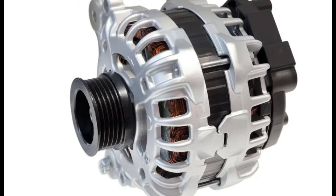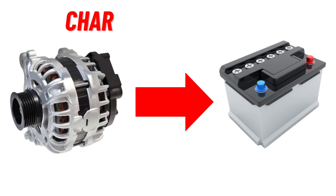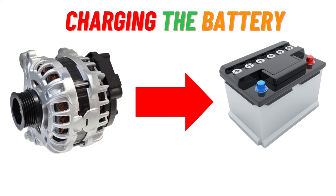Function 2: Charging the battery. Second, it charges the car battery. While the battery provides the initial power to start the engine, the alternator keeps it charged, ensuring there's always enough power to start the car and run electrical components.